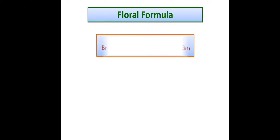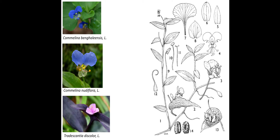The floral formula: since a spathe or boat-like bract is present, the flower is bractate. It is actinomorphic or sometimes zygomorphic. It is bisexual. P stands for perianth, arranged in two whorls of 3+3. Androecium is 3+3; if not united it is free. Gynoecium: 3 carpels. This is the floral formula of family Commelinaceae.